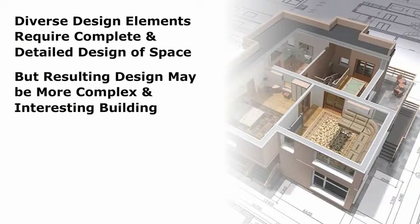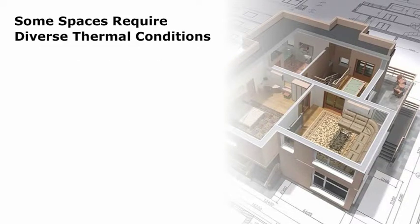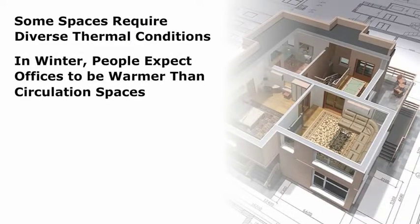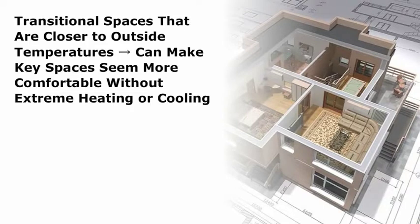Variety aids user orientation and distinguishes spaces from one another. Some spaces require diverse thermal conditions. In the winter, people expect offices to be relatively warmer than circulation spaces, which are transitional from the exterior to the interior. Just like a space can seem lighter and higher if preceded by a lower, darker space, transitional spaces that are closer to outside temperatures can make key spaces seem more comfortable without extreme heating or cooling, thereby saving energy over the life of the building.